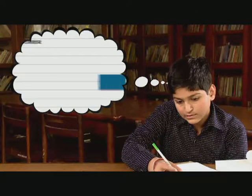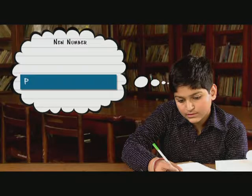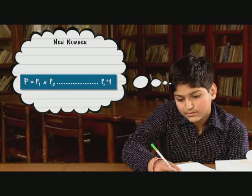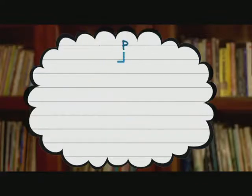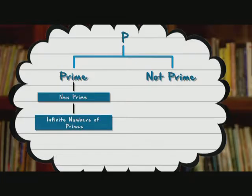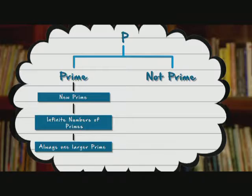Now Arvind creates a new number, P, which is basically P1 into P2 all the way to Pn plus 1. Now we have two possibilities: that P is a prime, or P is not a prime. If P is a prime, we have a new prime right away, which means there are not a finite number of primes, there is one larger prime. And our proof is complete.